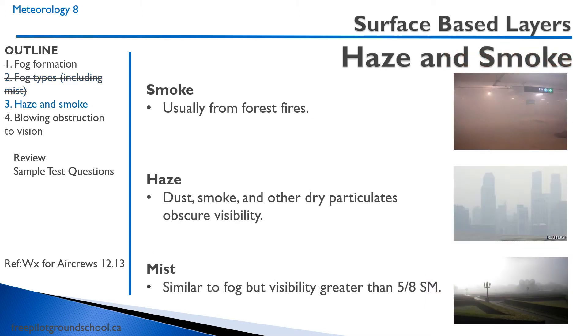There are some other surface-based layers you need to be aware of. There's smoke, usually from forest fires. We can have haze caused from dust, smoke, and other dry particulates that obscure the visibility.